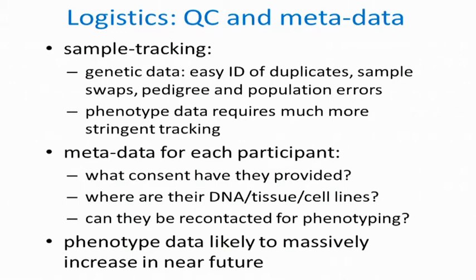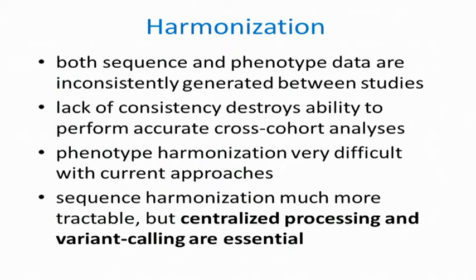As I mentioned, phenotype data is likely to massively increase in the near future, so it will become an increasingly larger fraction of the informatics burden. Now, I'll spend a little time talking about harmonisation, particularly in the sequence space. The need for harmonisation is driven by the fact that both sequence and phenotype data are generated inconsistently between studies — for various reasons, some sane and others not — and this lack of consistency really hampers, and in some cases destroys, our ability to draw useful conclusions across studies. It's very difficult to approach phenotype harmonisation using current methods, and as we aggregate larger and larger numbers of studies together, the current approach may end up not being scalable.